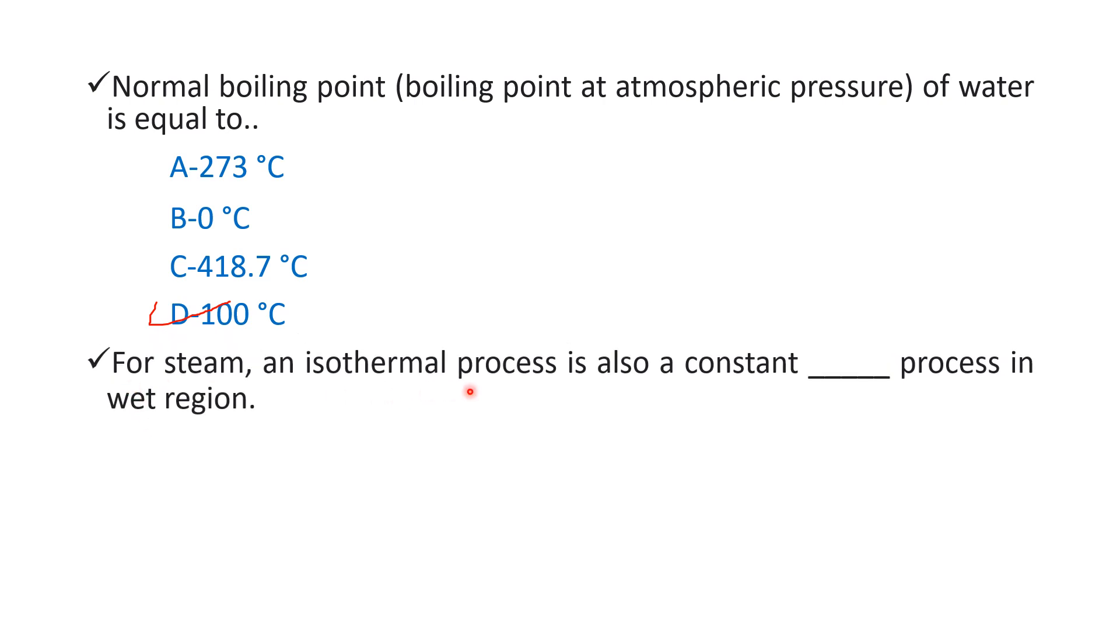Next question. For steam, an isothermal process is also a constant blank process in wet region. Option A volume, option B enthalpy, option C internal energy and option D pressure. So over here right answer is option D pressure. Yani ki isothermal process constant pressure process in wet region kaha jata hai. For steam, steam ke liye, isothermal process ko kya kaha jata hai? Constant pressure process in wet region.